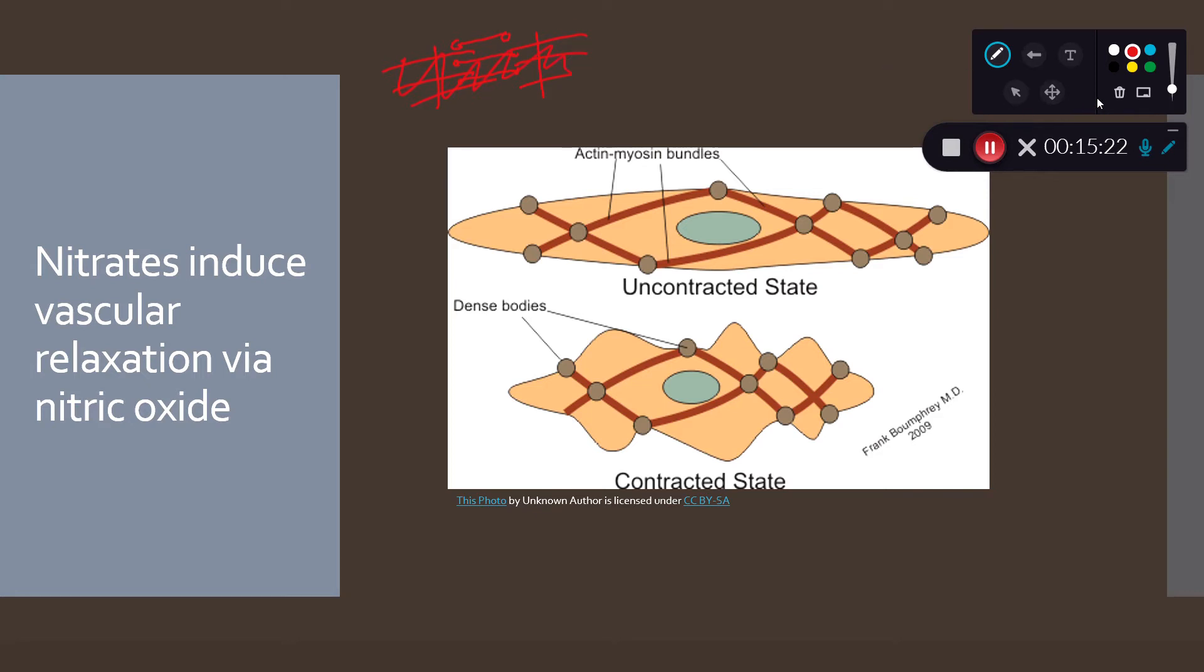What we have instead is the actin and myosin are all over the outside of the cell. But just like striated muscle, when the actin and myosin interact they cause this much less coordinated contraction, and instead of it being controlled directly by the entry of calcium, it's controlled by proteins which phosphorylate the contractile proteins.